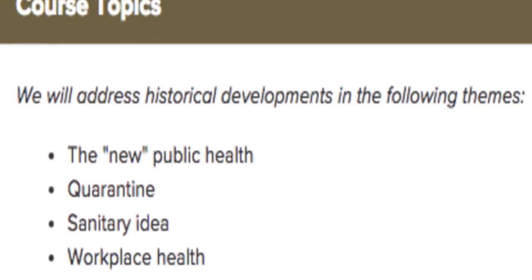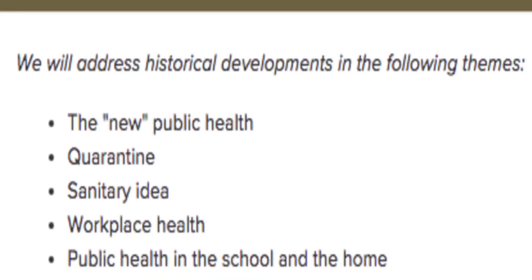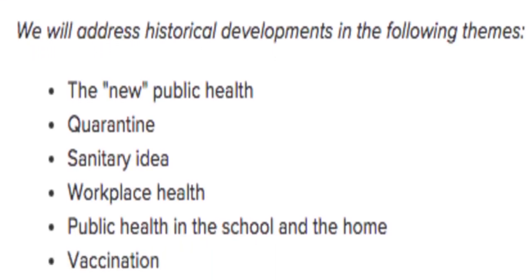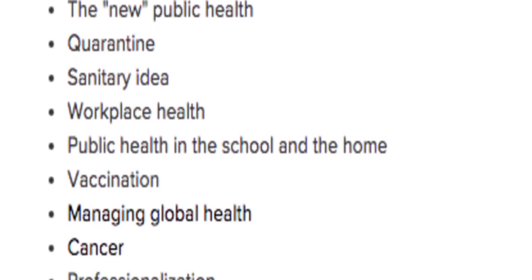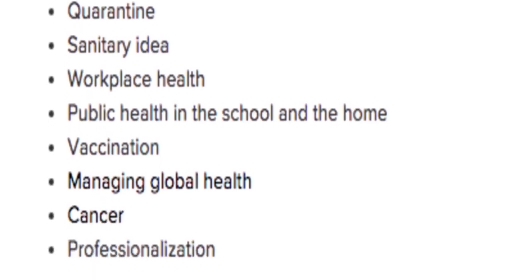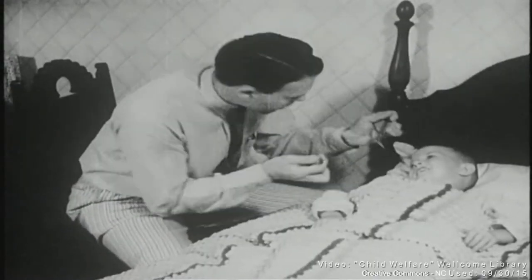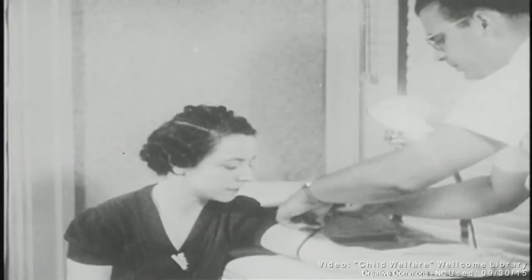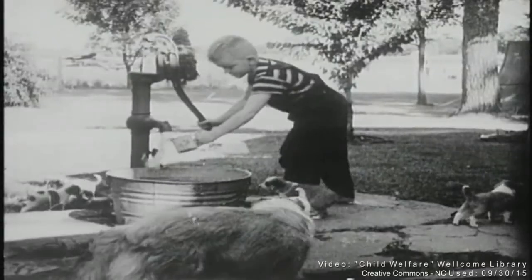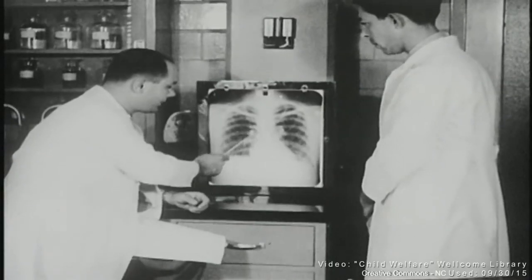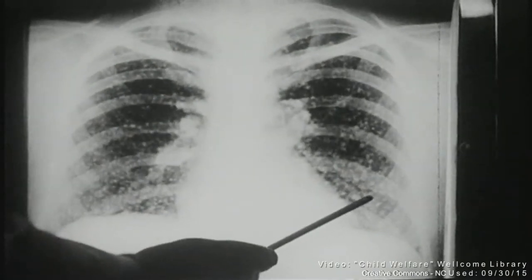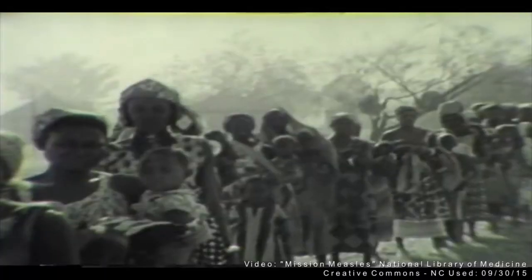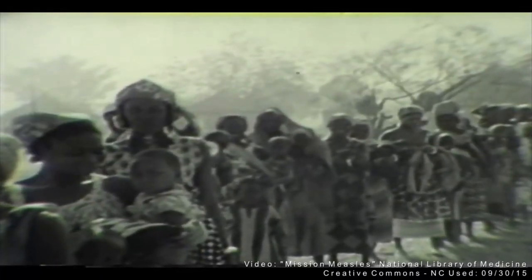When you see the syllabus, you'll notice that the course is arranged thematically rather than chronologically. We look at a variety of fundamental topics in public health, from sanitation to public health in the home, the school and the workplace. We examine the controversial history of interventions such as vaccination and exposure to toxic substances. We take a critical look at how public health has developed strategies to prevent and control chronic diseases, such as cancer. And we analyse what it means to practice public health in the context of globalisation.